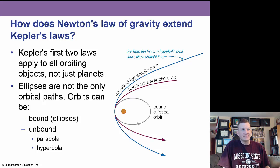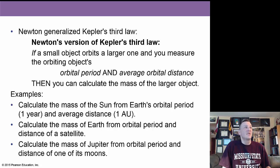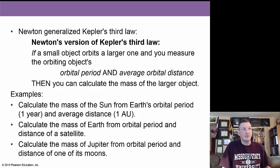Kepler's first two laws apply to all orbiting objects, not just planets. Ellipses are not the only orbital path — they can be ellipses, parabolas, or hyperbolas. Newton generalized Kepler's Third Law: if a small object orbits a larger one and you measure the orbital period and average orbital distance, you can calculate the mass of the larger object.